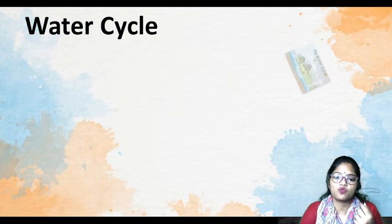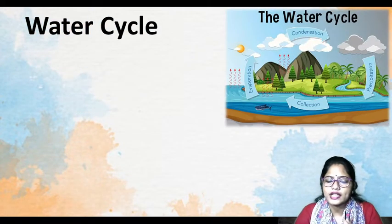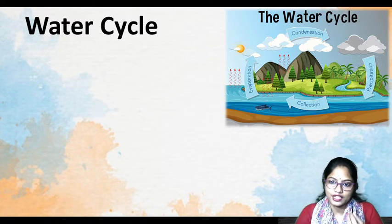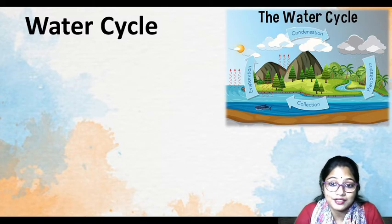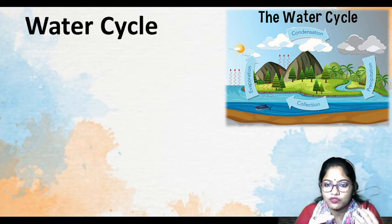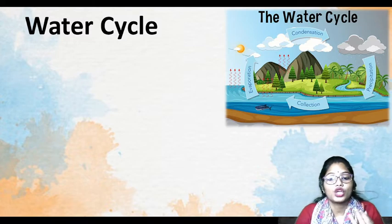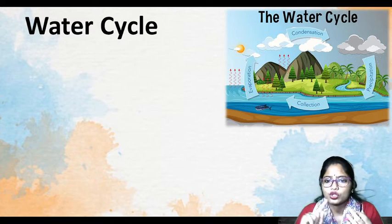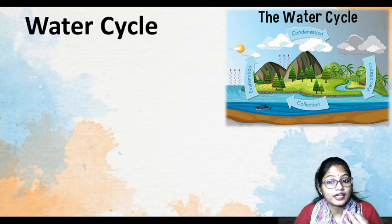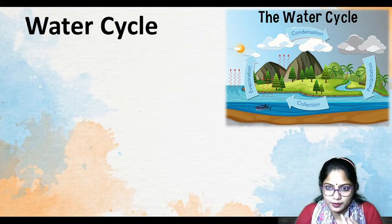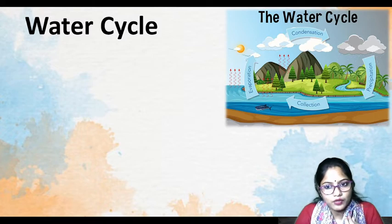So the first cycle is the Water Cycle. We said that transfer happens between different ecosystems, so where can water transfer from? First, we know that from the sources of water — different sources like seas, oceans, rivers, ponds — water will go from there. Evaporation will happen and water will go into the atmosphere as water vapor.